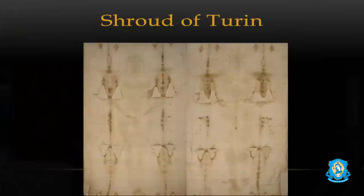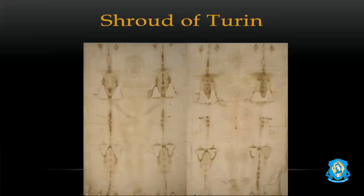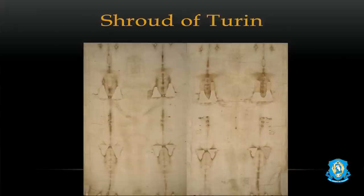You'll notice there are elongated lines on the image — those are burn marks from a fire in 1532 that scorched the image. Those are not part of the body of Christ. Now let's go to the next slide, where we see that same shroud but photographed — notice the difference from the naked eye to the photograph. It's much clearer.